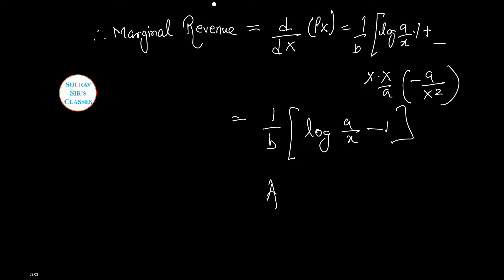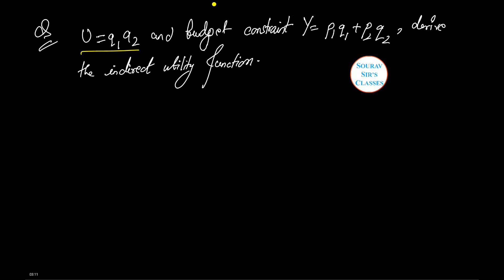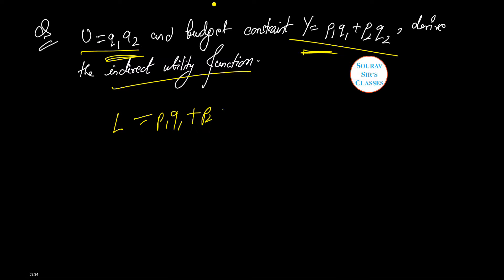Now let us see another question. We are given a utility function u equals q1·q2 and a budget constraint p1·q1 plus p2·q2 equals u. We need to derive the indirect utility function. For the indirect utility function we take the Lagrangian: L equals p1·q1 plus p2·q2 plus λ·(u minus q1·q2), where λ is the Lagrangian multiplier.